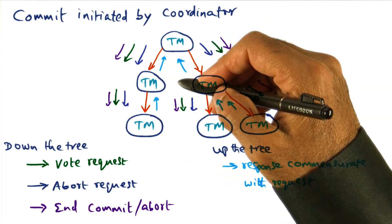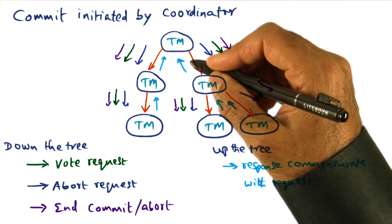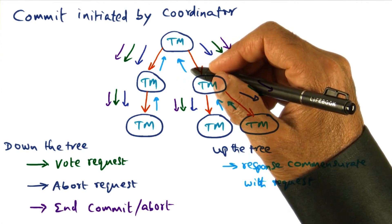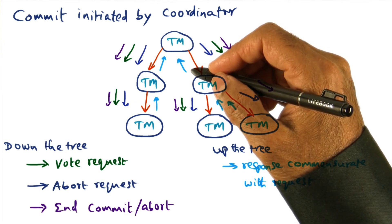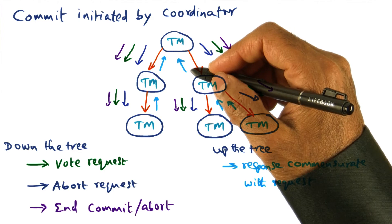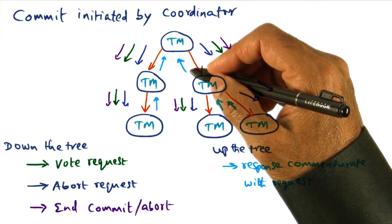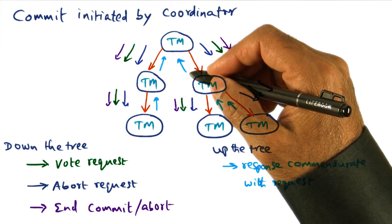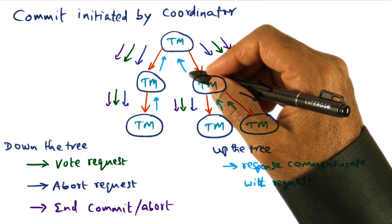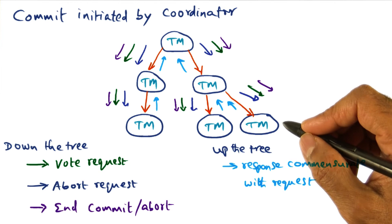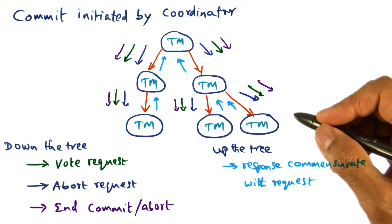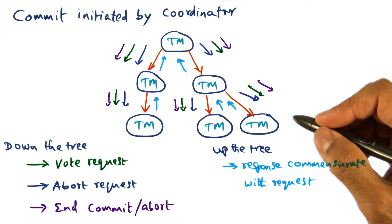So for instance, if the transaction tree is representing a client-server relationship between a client that opened a window using the window manager on the screen, then if the client crashes, the transaction manager who is the coordinator for that particular client will indicate to the transaction manager at the window manager site that this particular transaction ID is aborting. And in that case, the window manager can simply clean up the state because the state that it has is a volatile state. Namely, a window that it created on behalf of the client. So it can take care of it internally, it need not be persisted.